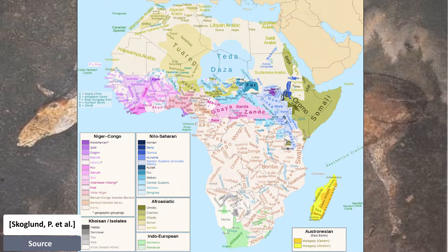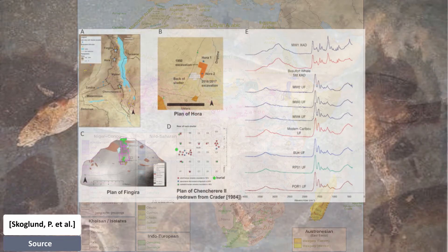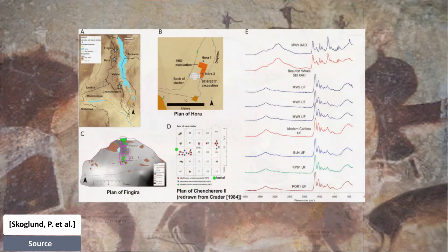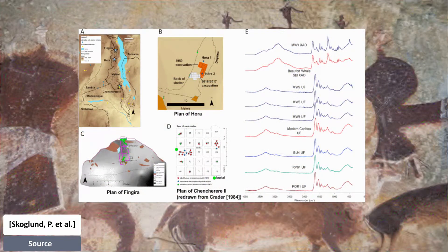Earlier migrations, which brought ancestry related to the ancient Near East, brought herding to Eastern Africa by 4,000 years ago and to Southern Africa by 2,000 years ago. In this paper, they reconstruct the African population structure prior to the spread of food production, with the help of genome-wide data from 15 ancient Sub-Saharan Africans.